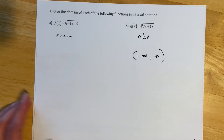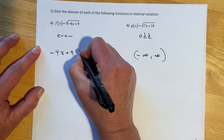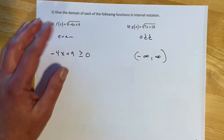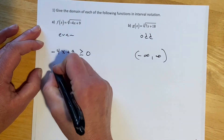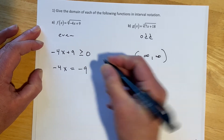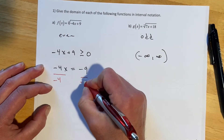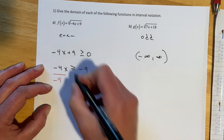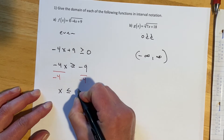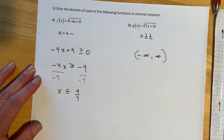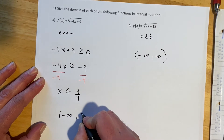For the even root, it's not as simple. We have to take the argument and set it greater than or equal to zero. As long as this stays greater than or equal to zero we'll have a real number; if it goes negative we get imaginary numbers. So we kick the 9 over and then divide both sides by negative 4. Remember, this is an inequality, so dividing by a negative reverses the inequality sign. This gives us x is less than or equal to 9/4, so the domain is negative infinity up to and including 9/4.